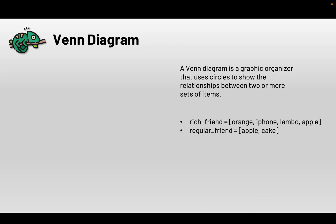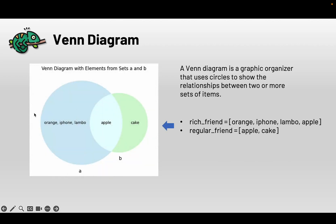Let me give you an example. I have two friends — one is a rich friend and the other is a regular friend. Each of them possesses different items. The rich friend has orange, iPhone, Lambo, and apple. My regular friend has apple and a cake. By creating the Venn diagram I can find out what items they have in common and what items they don't.